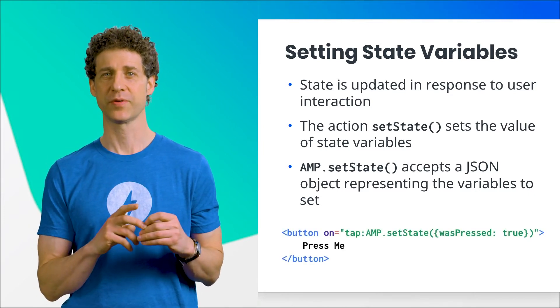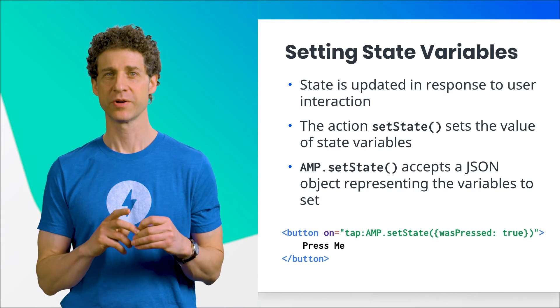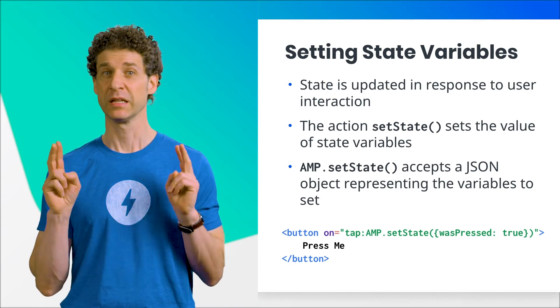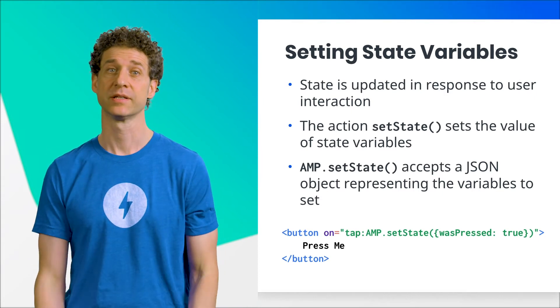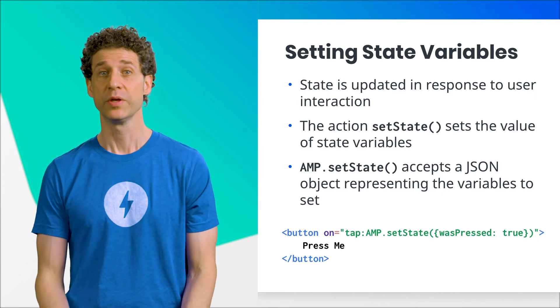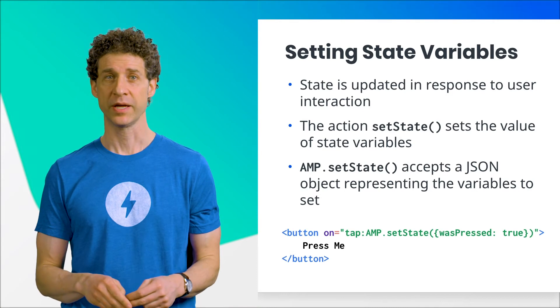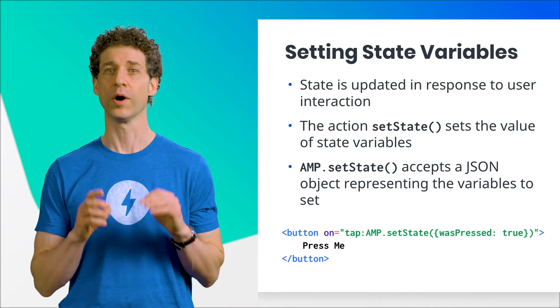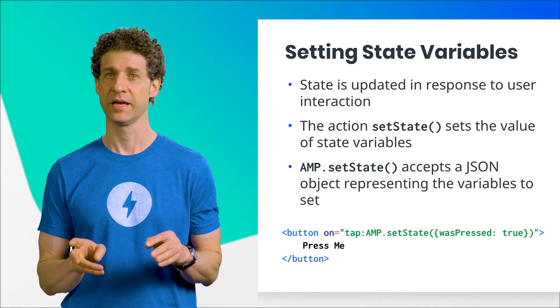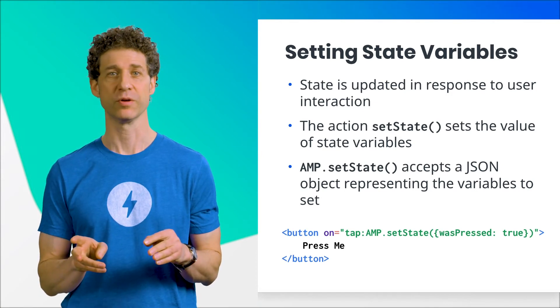The sample code on screen shows a button listening for when it is pressed or clicked. When the user presses the button, the state variable called wasPressed is set to the value true.